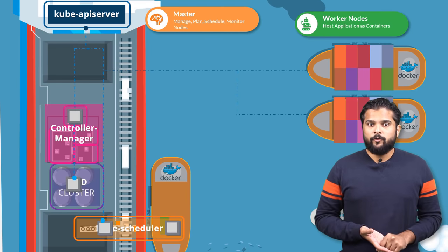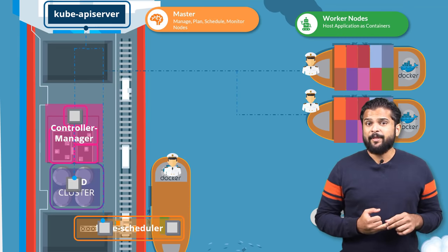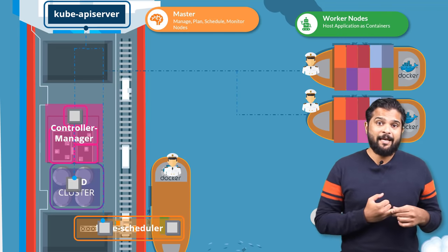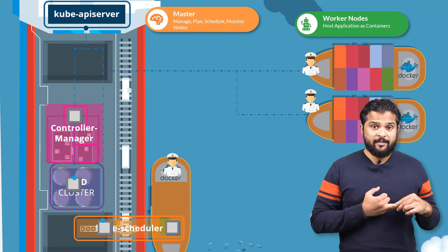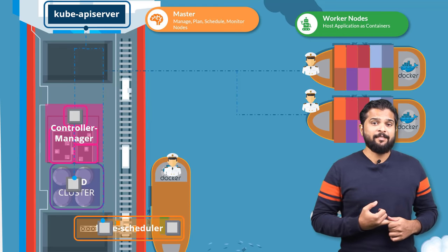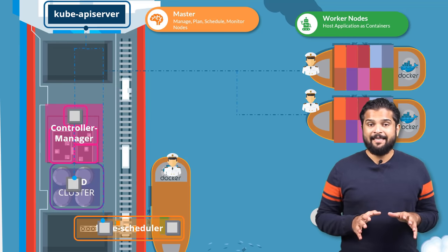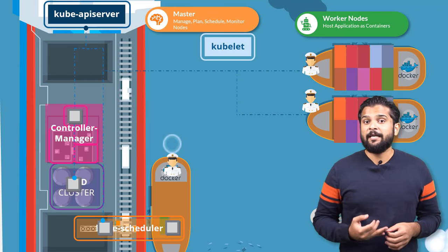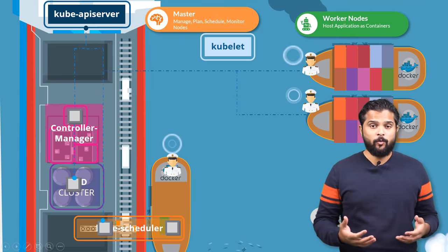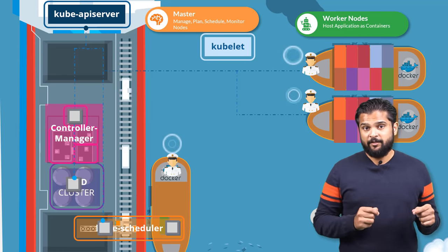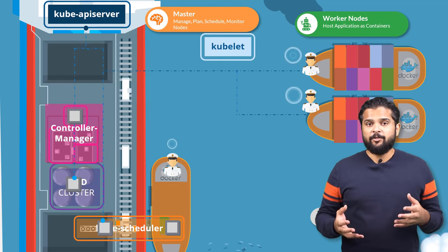Let us now turn our focus onto the cargo ships. Every ship has a captain. The captain is responsible for managing all activities on these ships — liaising with the master ships, starting with letting the master ship know that they are interested in joining the group, receiving information about the containers to be loaded on the ship, loading the appropriate containers as required, and sending reports back to the master about the status of the ship and the containers on the ship. The captain of the ship is the kubelet in Kubernetes. A kubelet is an agent that runs on each node in a cluster. It listens for instructions from the kube API server and deploys or destroys containers on the nodes as required. The kube API server periodically fetches status reports from the kubelet to monitor the status of nodes and containers on them.